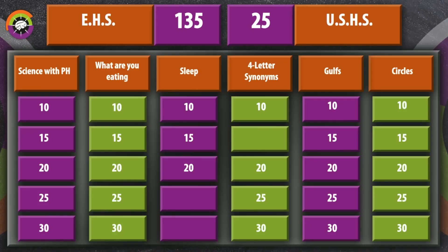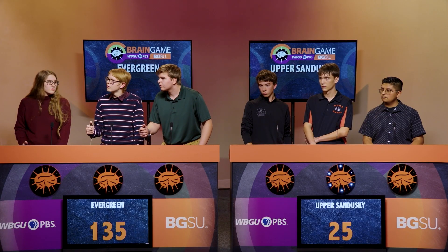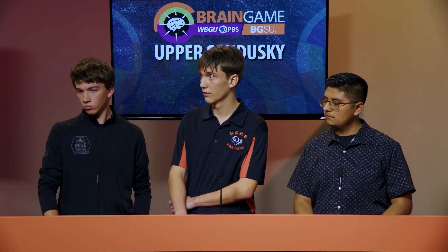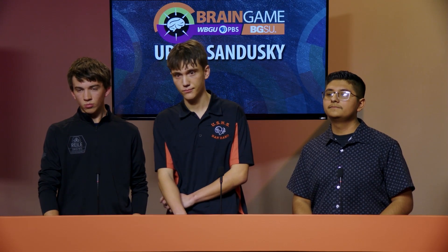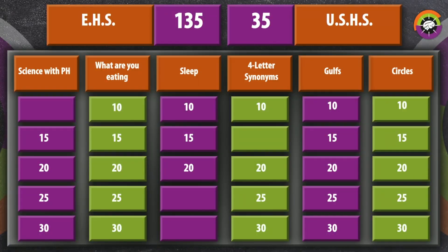Evergreen in control. Science with pH for 10 points — identify science terms that begin with the letters 'ph.' Identify the food-making process performed by plants. Upper Sandusky buzzes in — Daniel answers 'photosynthesis,' which is correct. Upper Sandusky takes back control.